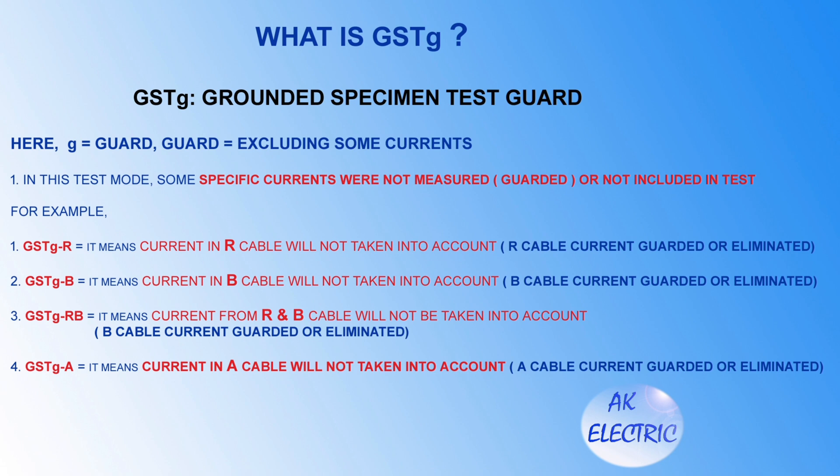GSDGB means the current in the blue cable will not be taken into account — blue cable current is guarded or eliminated. GSDGRB means current from both red and blue cables will not be taken into account — both are guarded or eliminated. GSDGA means the current in the A cable will not be taken into account — A cable current is guarded or eliminated.